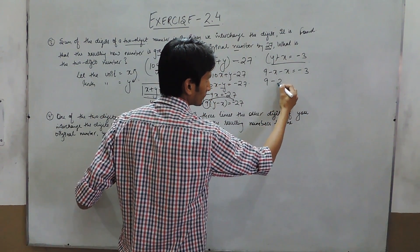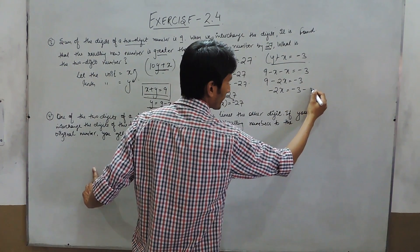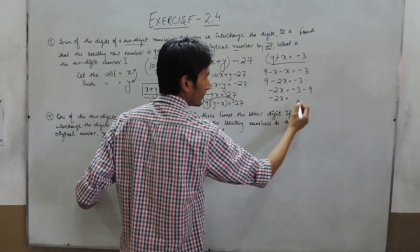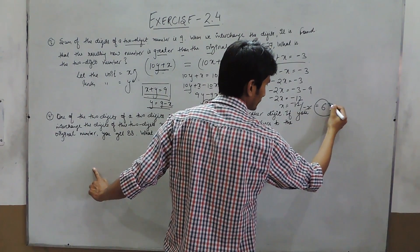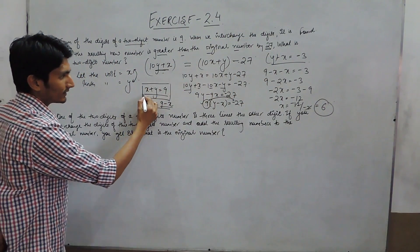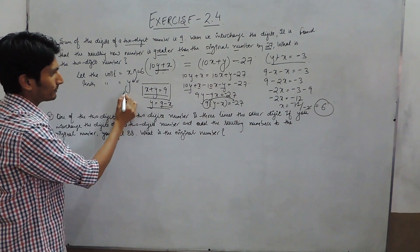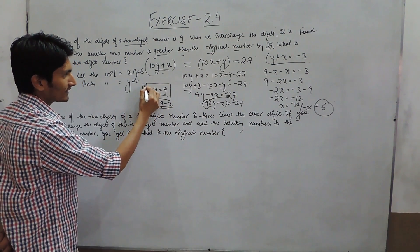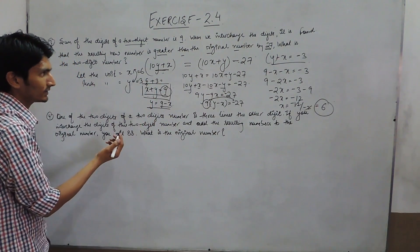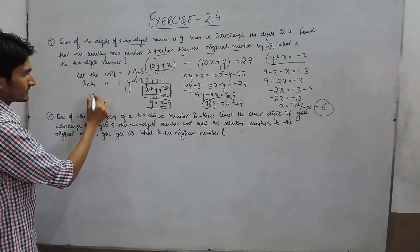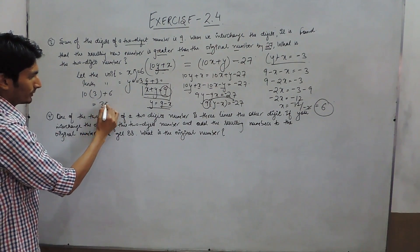This simplifies to 9 minus 2x equals minus 3, so 2x equals 12, and x equals 6. The unit place digit x is 6. Since x plus y equals 9 and x is 6, y must be 3. So the number is 10 times 3 plus 6, which equals 36.